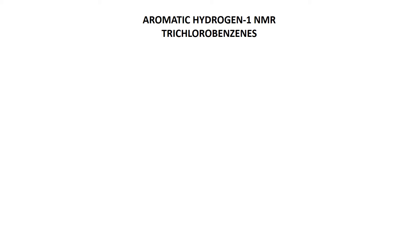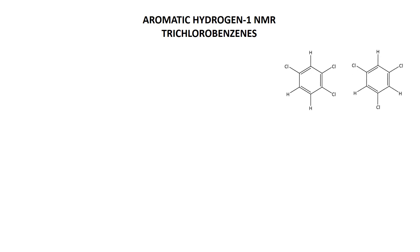So we've done one chlorine, we've done two chlorines. Let's finish our discussion of aromatic proton NMR by thinking about the trichlorobenzenes — three isomers thereof.